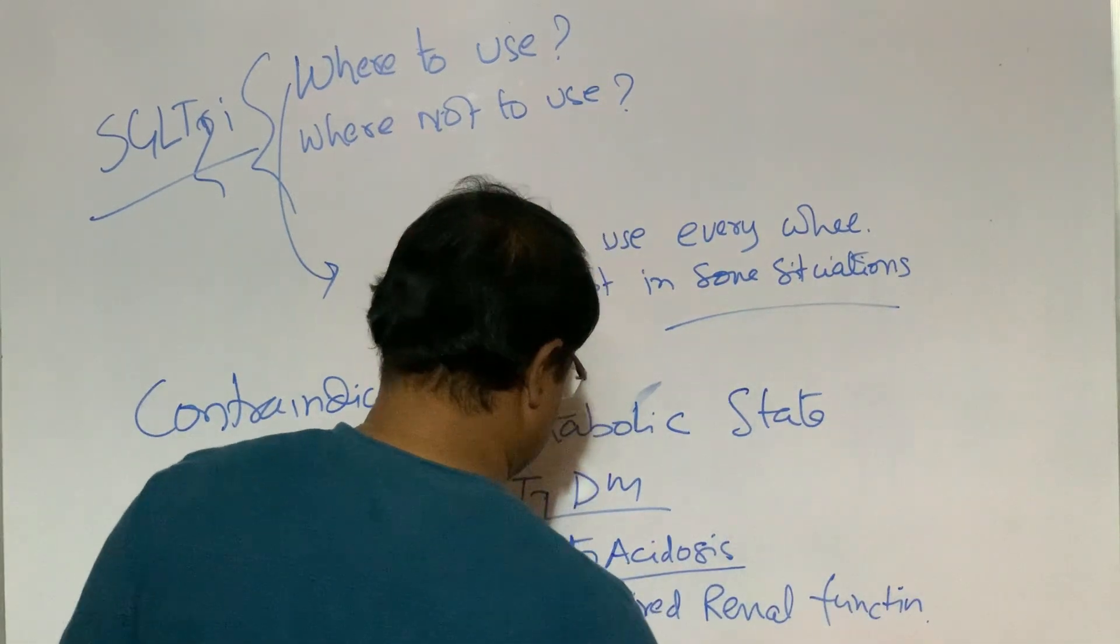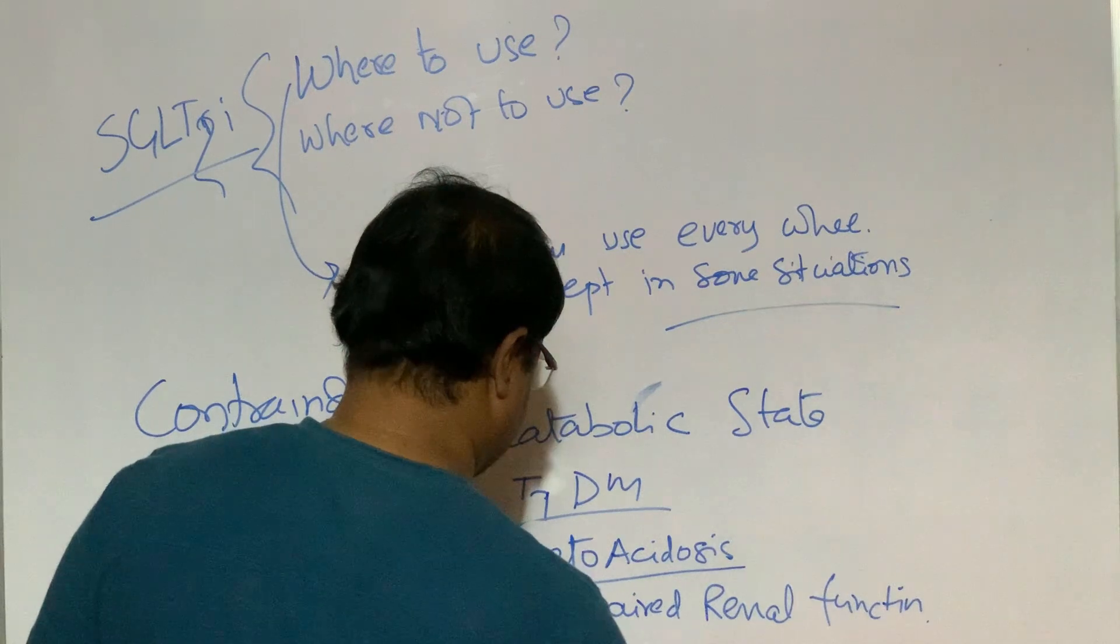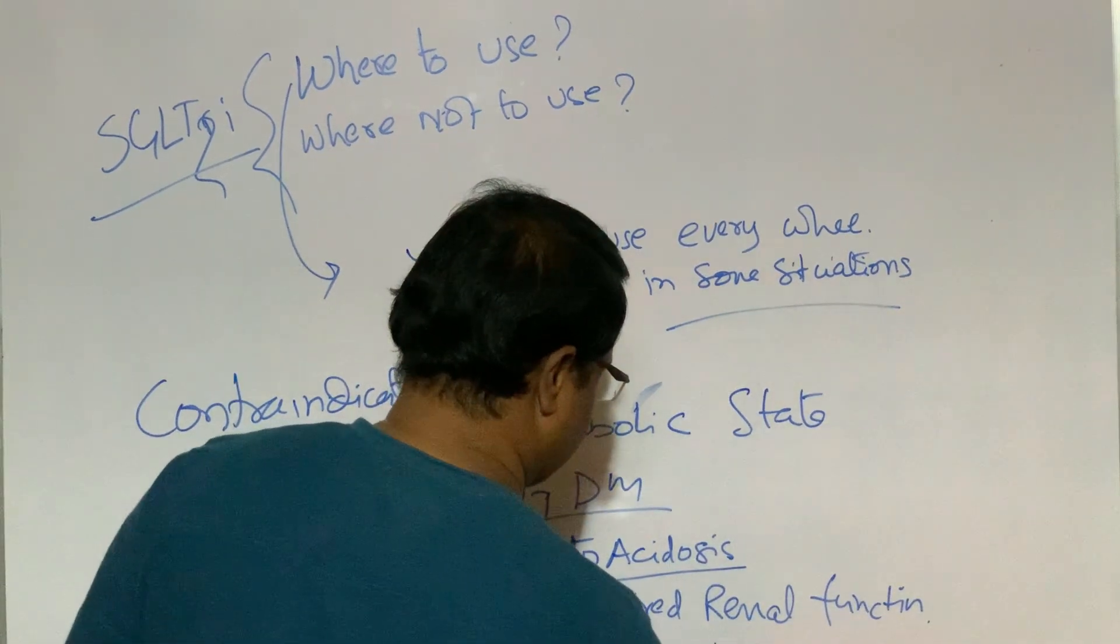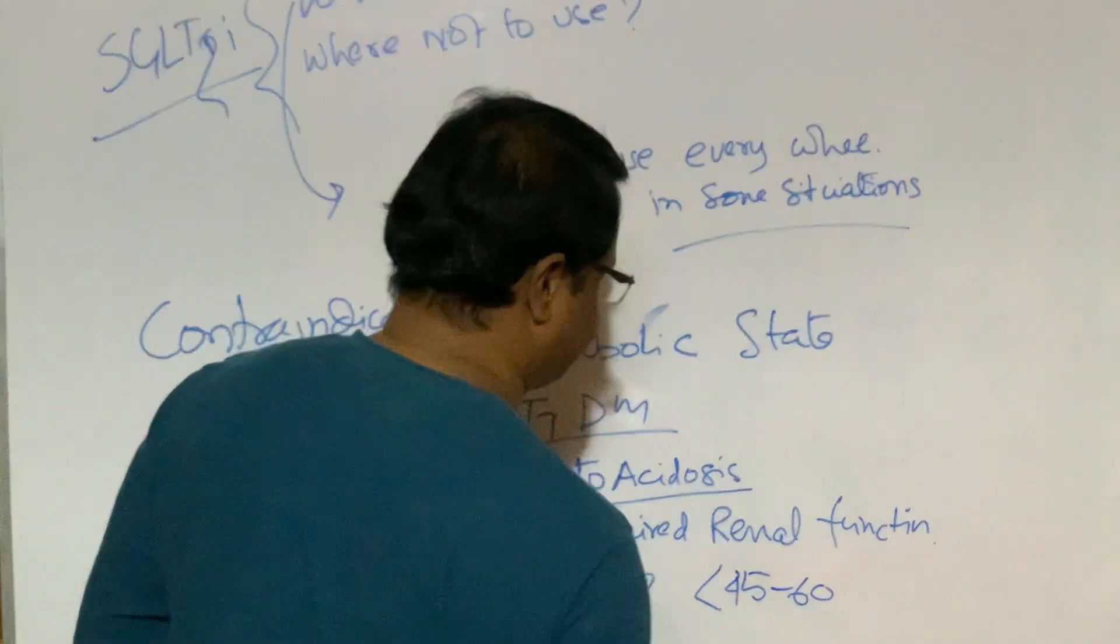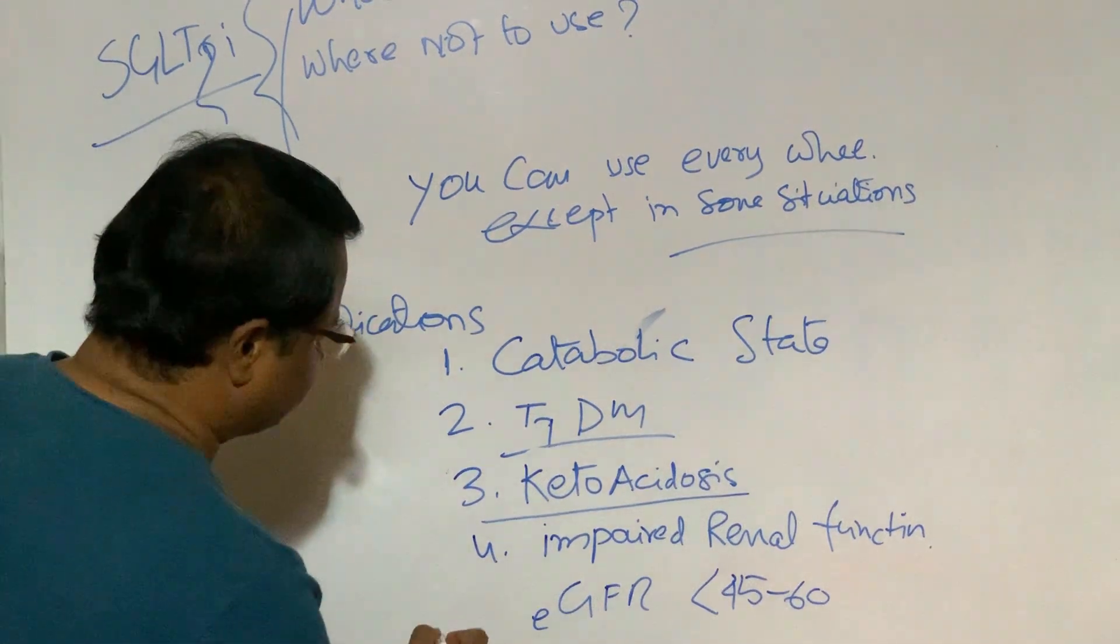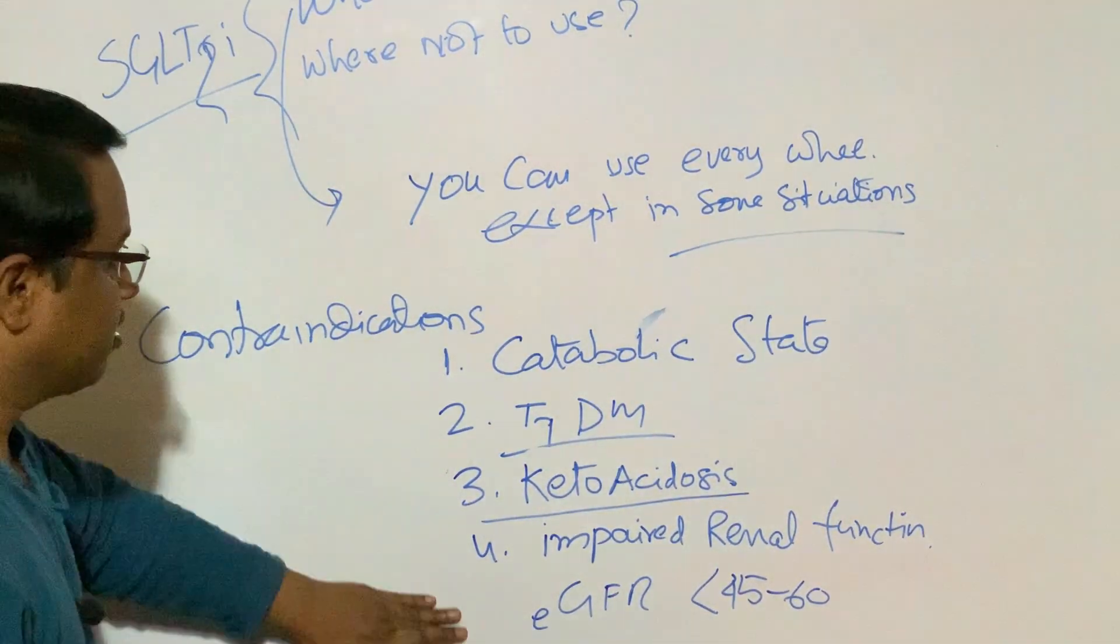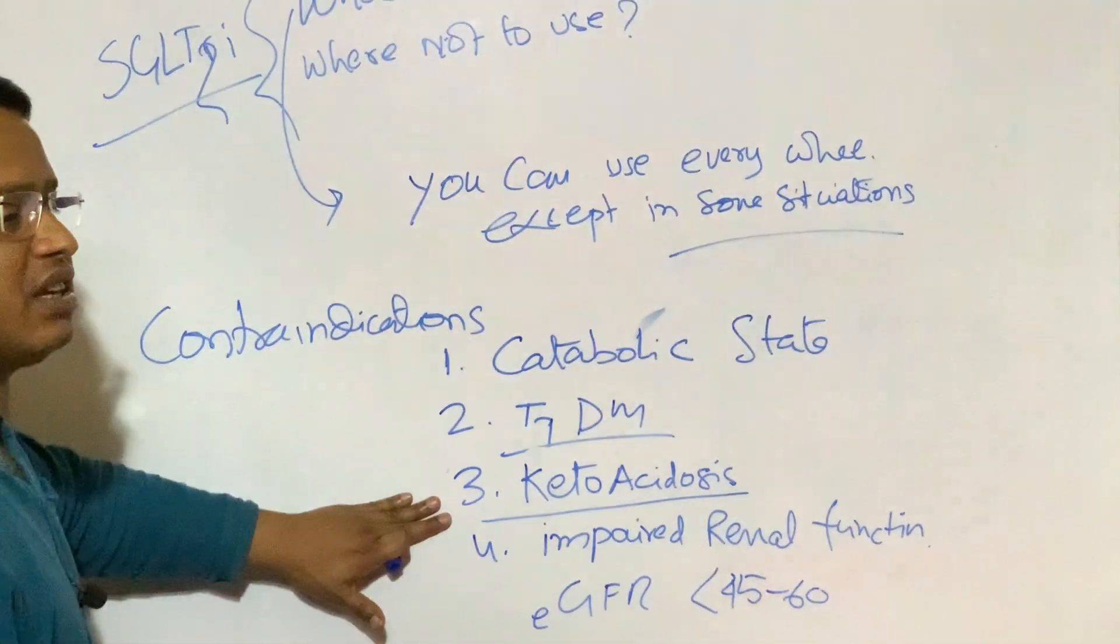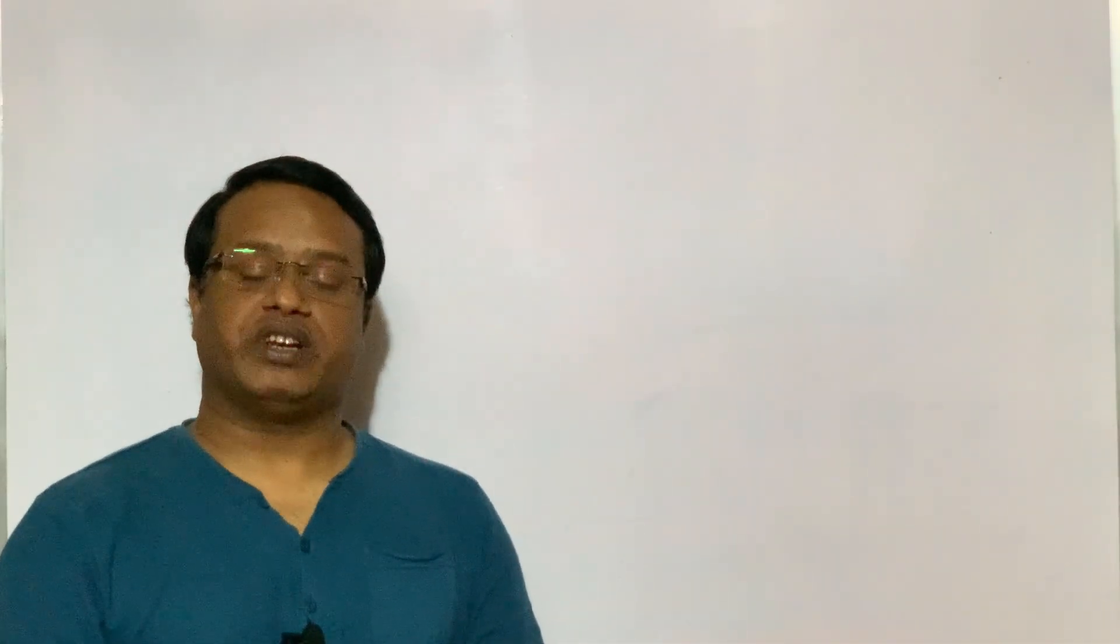Number four, impaired renal function. That means EGFR is less than 45 to 60. That is the main point where we cannot use the drug. Otherwise, we can use it everywhere.